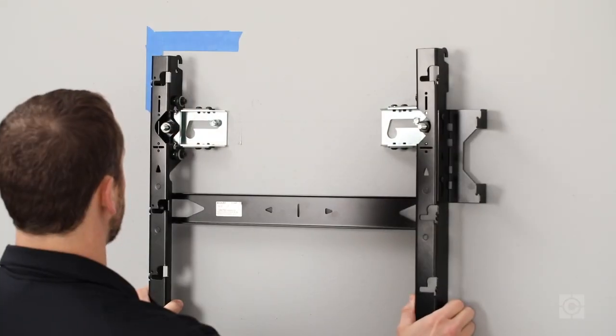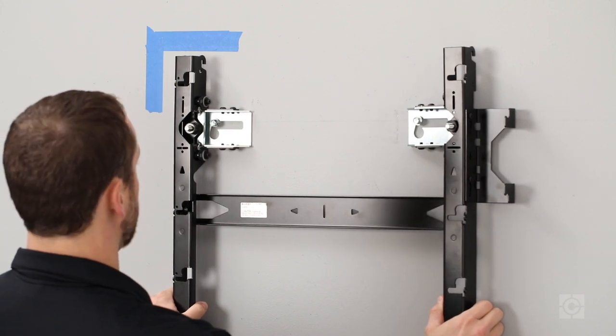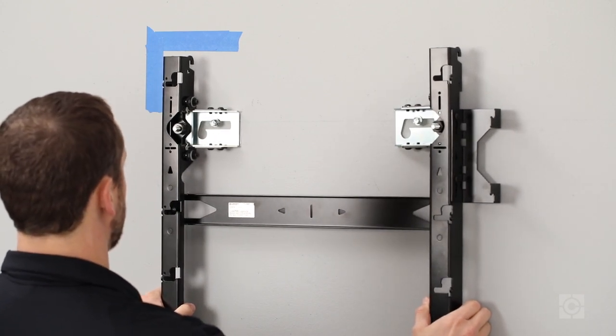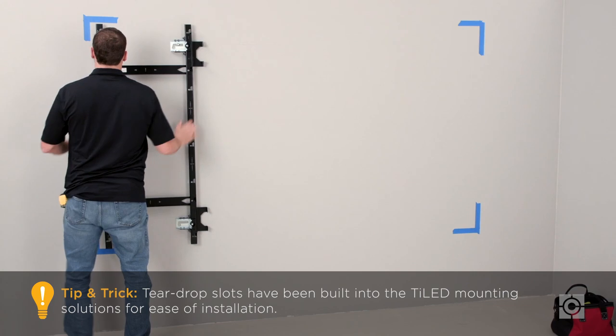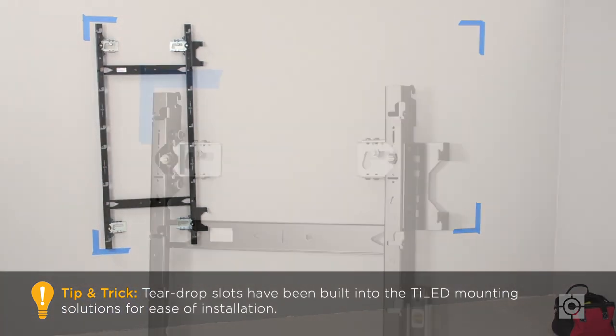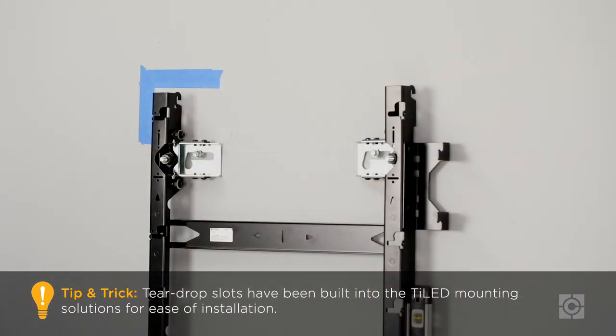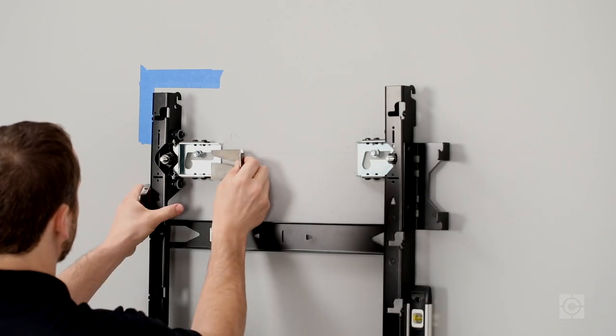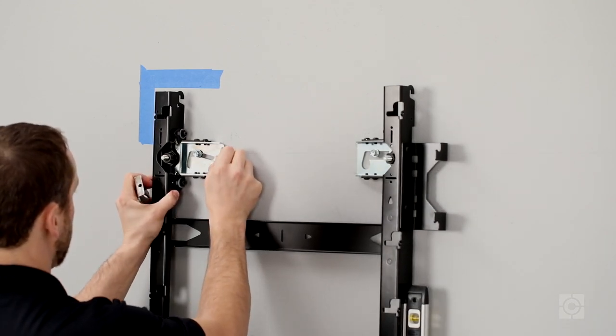Now, hang the first mount utilizing the teardrop slots and slide the mount to the desired position. Then, slide the left and right adjustment washers into place.